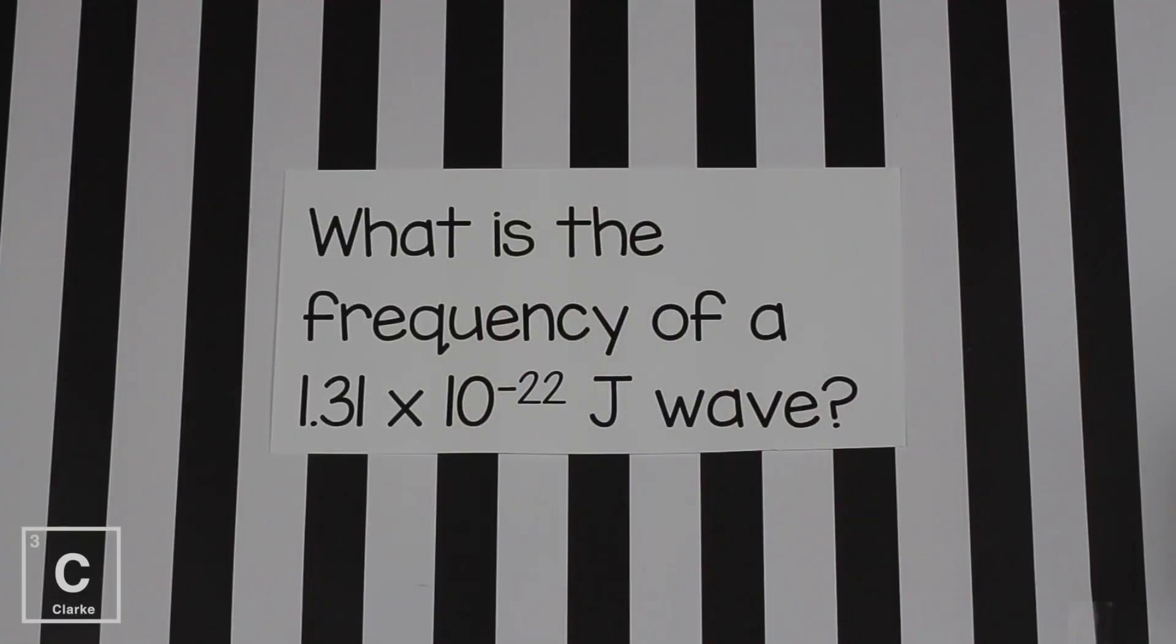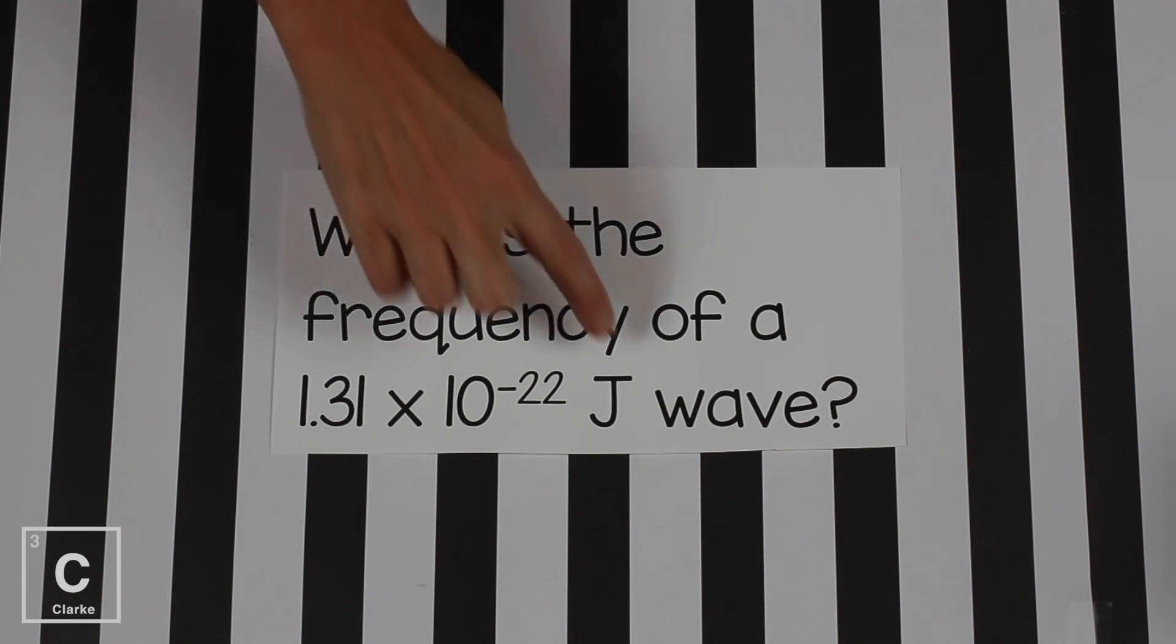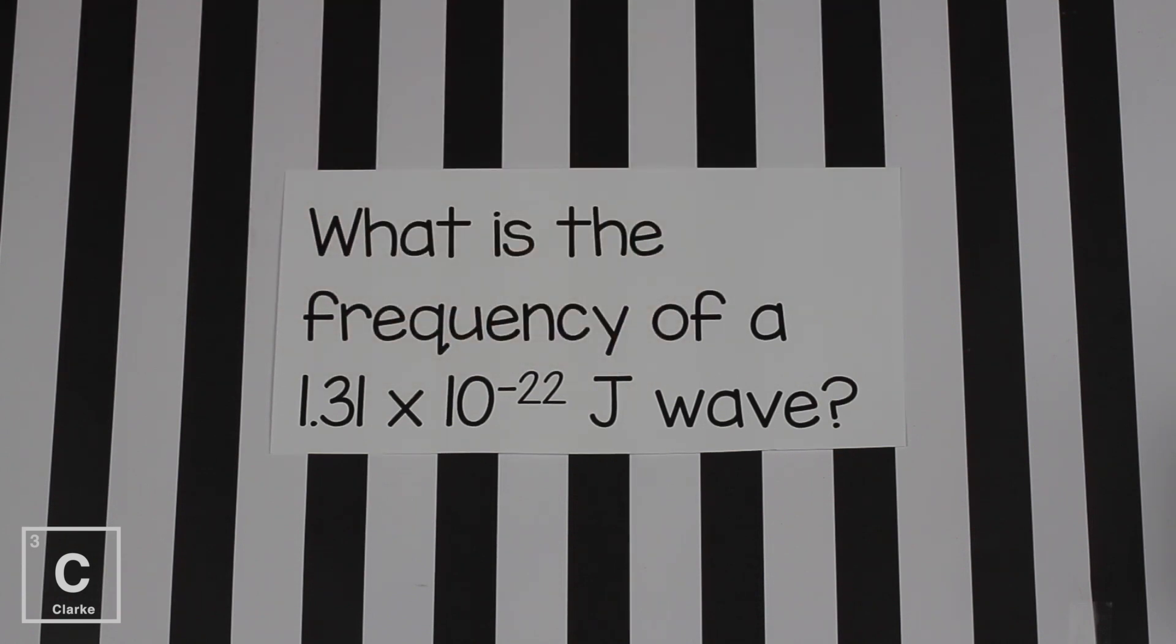Let's look at this example. Now these problems are going to differ from the last set of problems because we are not talking about the speed of a light wave anymore. We're talking about the energy of a light wave. We know that this is an energy problem because joules, capital J, that is an energy unit. What is the frequency of a 1.31 times 10 to the negative 22nd joule wave?